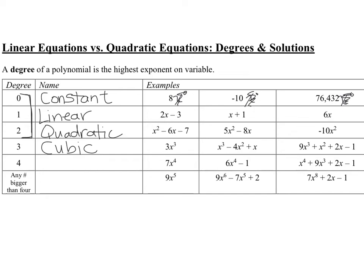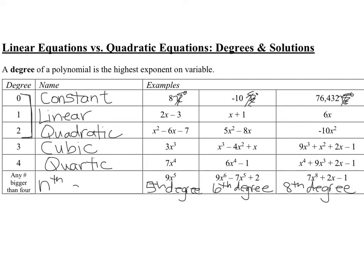If the highest exponent is 4, the expression is called quartic — like a quarter. Anything higher than 4, we name it by its degree: for example, 9x to the 5th is a 5th degree polynomial, 9x to the 6th is a 6th degree polynomial, and so on. We call these the nth degree, where n equals the highest exponent.